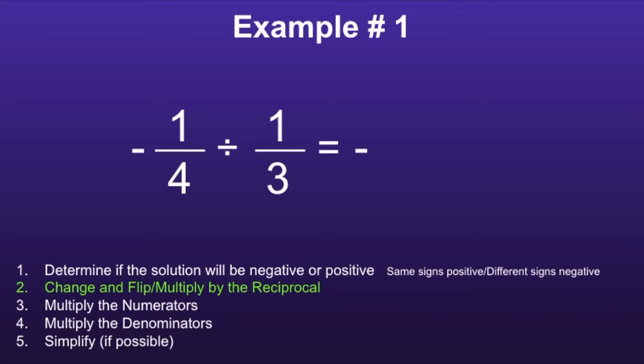Step two: change and flip, or mathematically speaking, multiply by the reciprocal. So what we have to do is change the division sign to a multiplication sign and change the last fraction to its reciprocal, which means switching the numerator and denominator. So one-third becomes three over one.